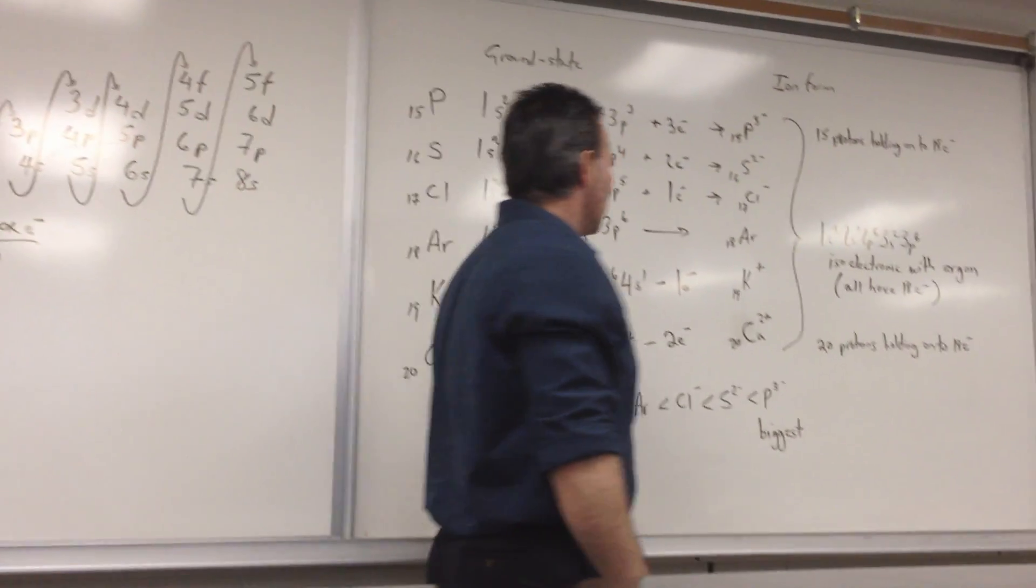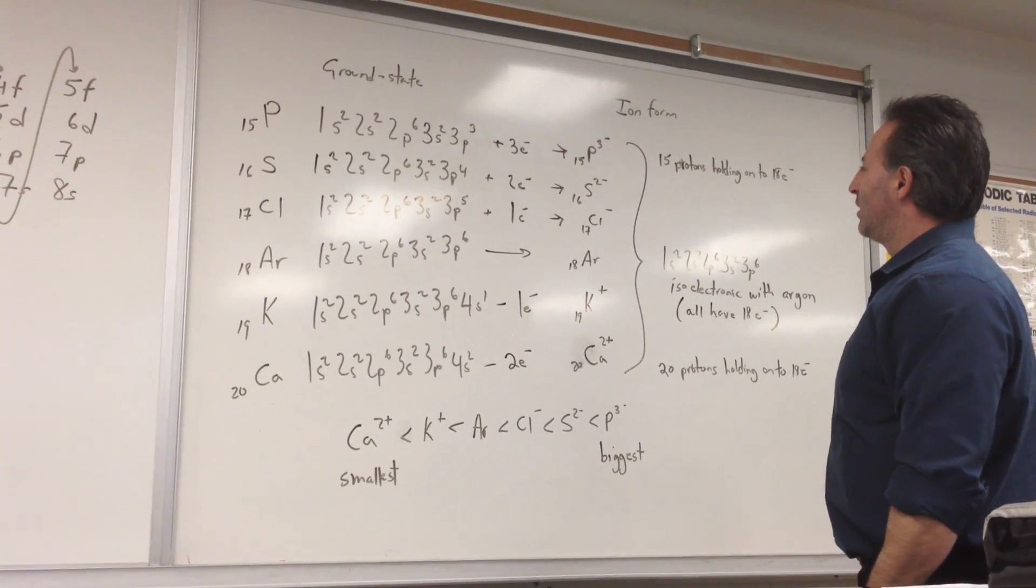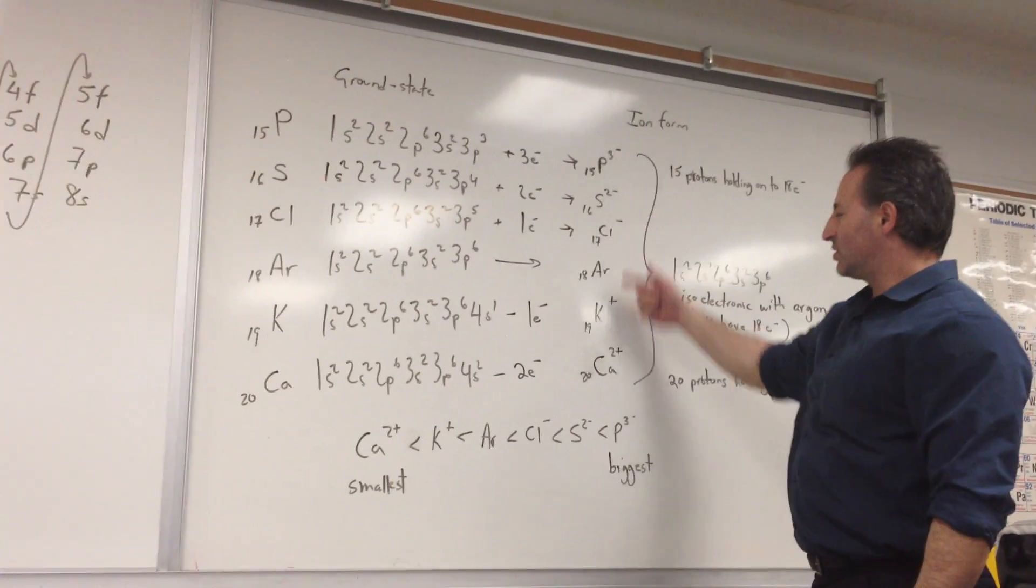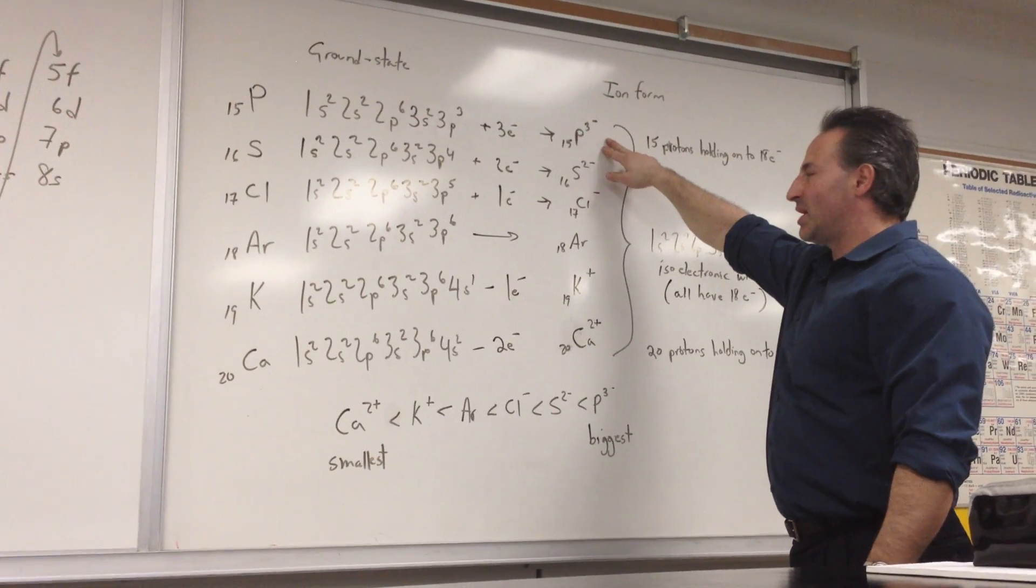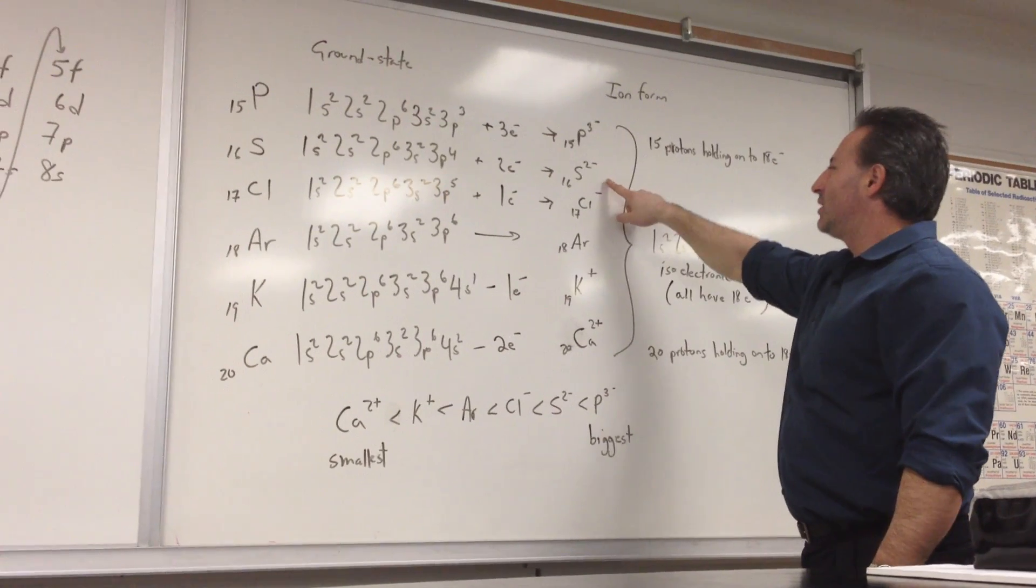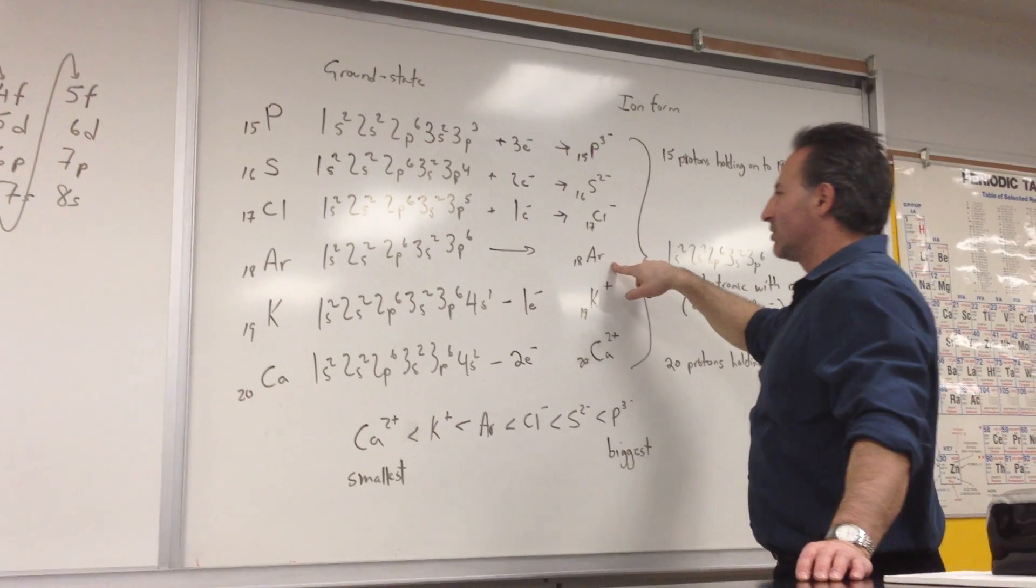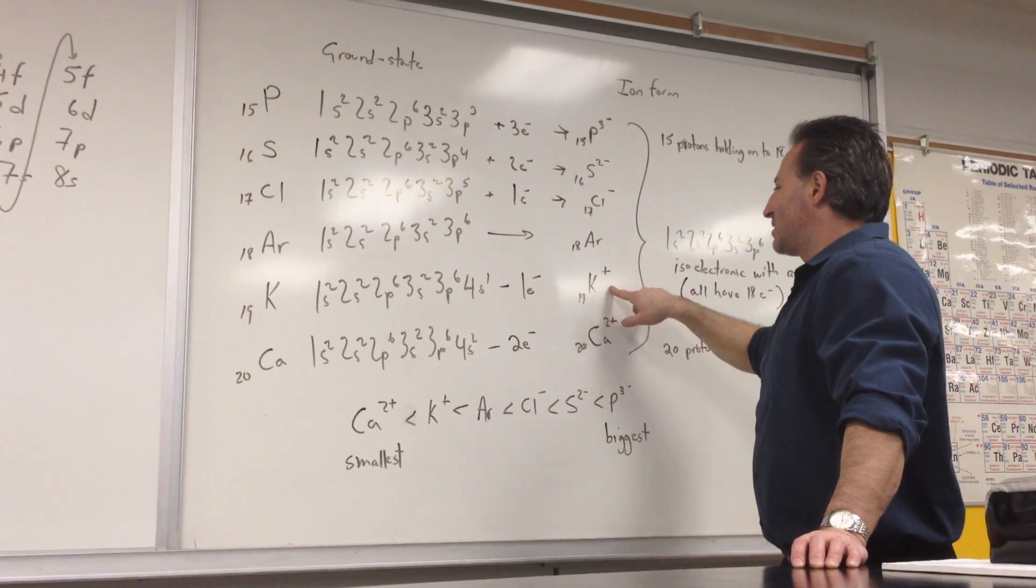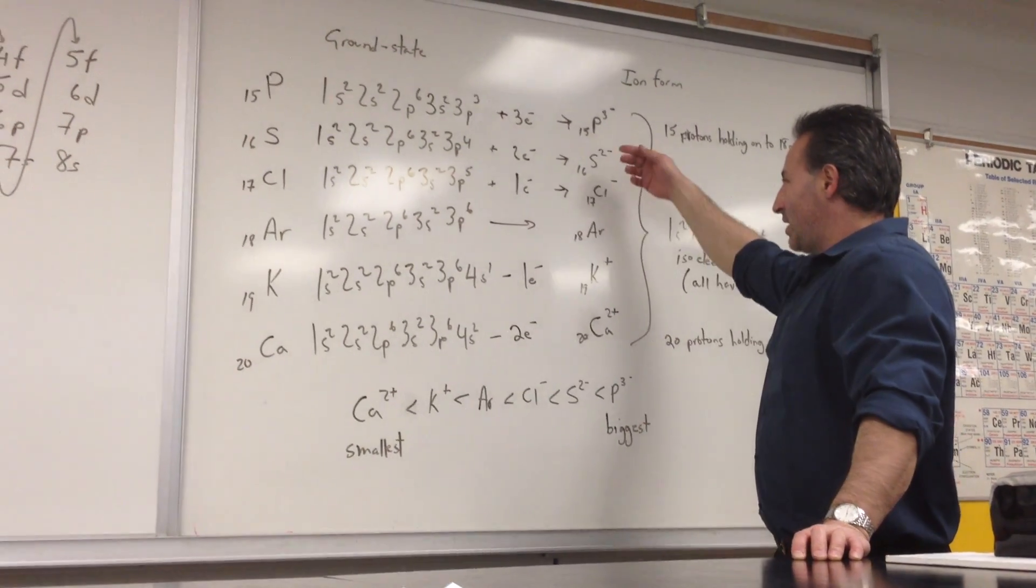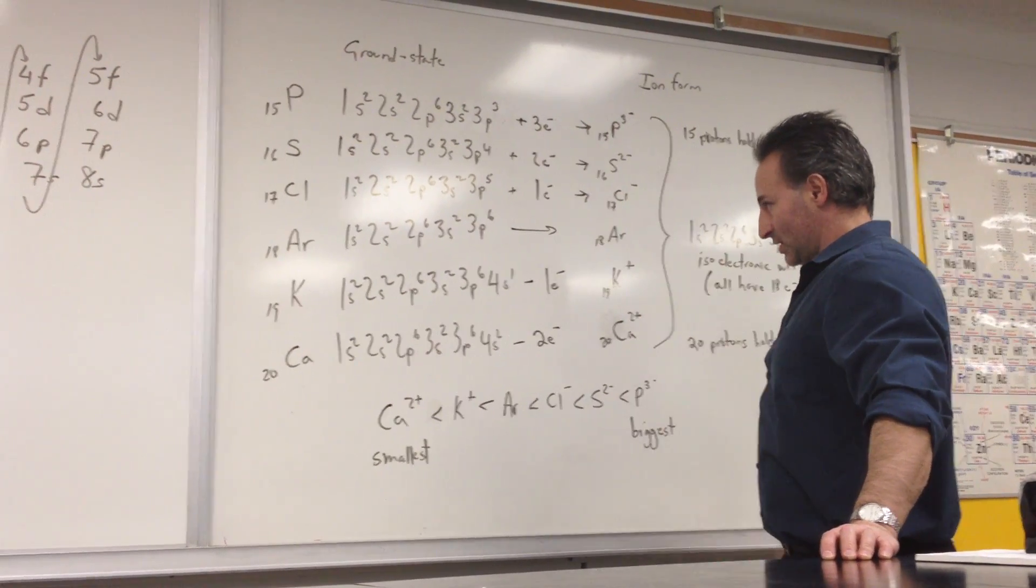So what we selected here was a series of atoms that form different ions, anywhere from phosphorus to calcium. Phosphorus forms a minus 3 charge, sulfur forms a sulfide anion, chlorine forms a chloride anion, argon does not form an ion because it's got a stable configuration as we'll see, potassium forms a plus 1 cation, and calcium forms a plus 2 cation. They are ranging in atomic number from 15 to 20. Everything from 15 to 20 is listed here.